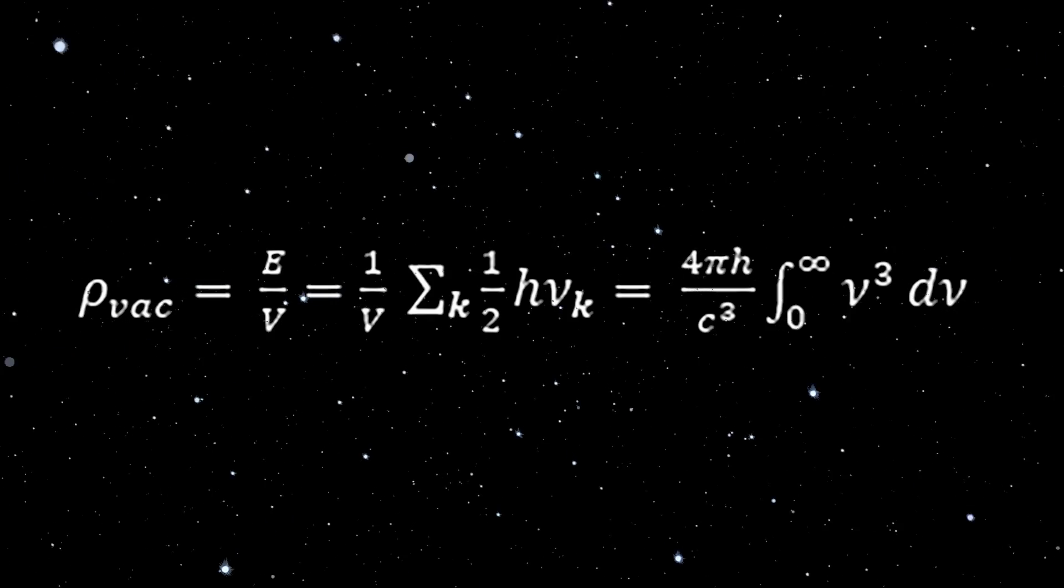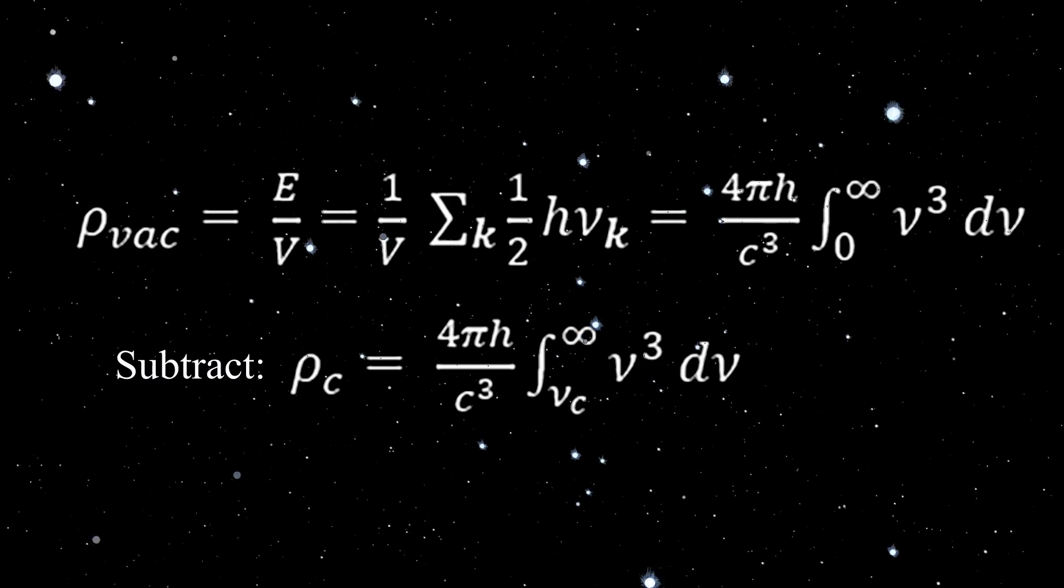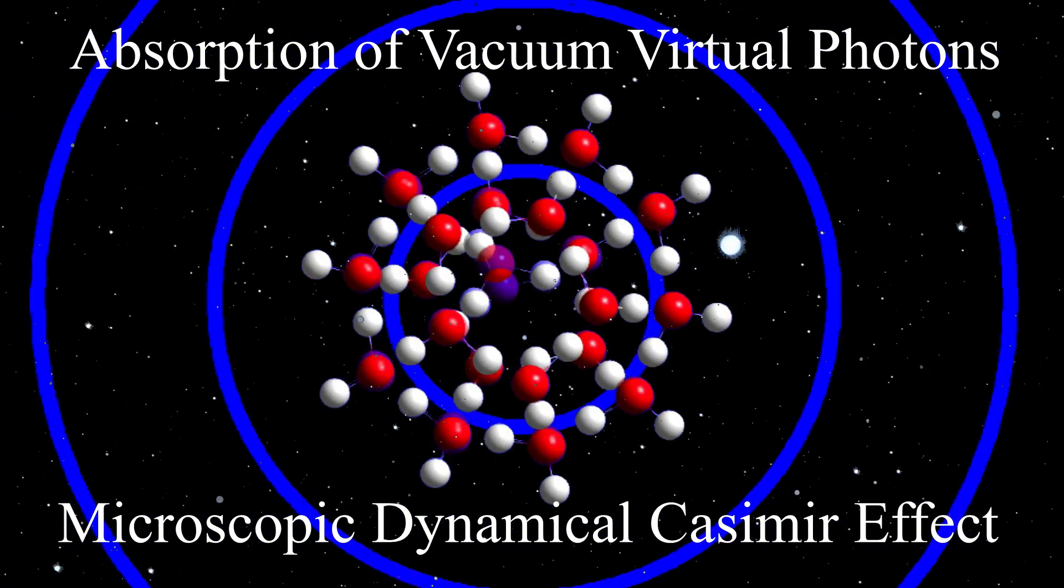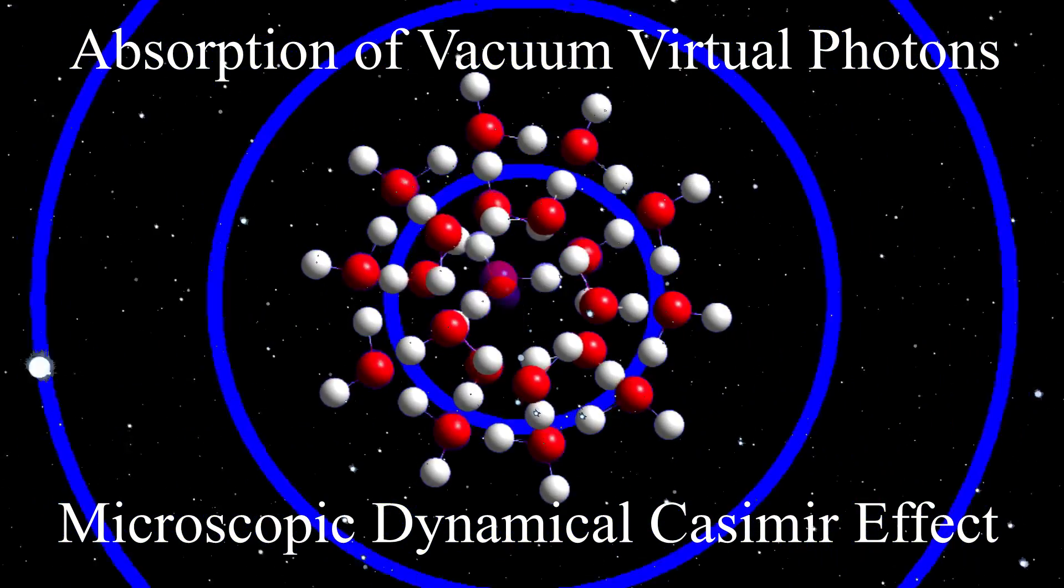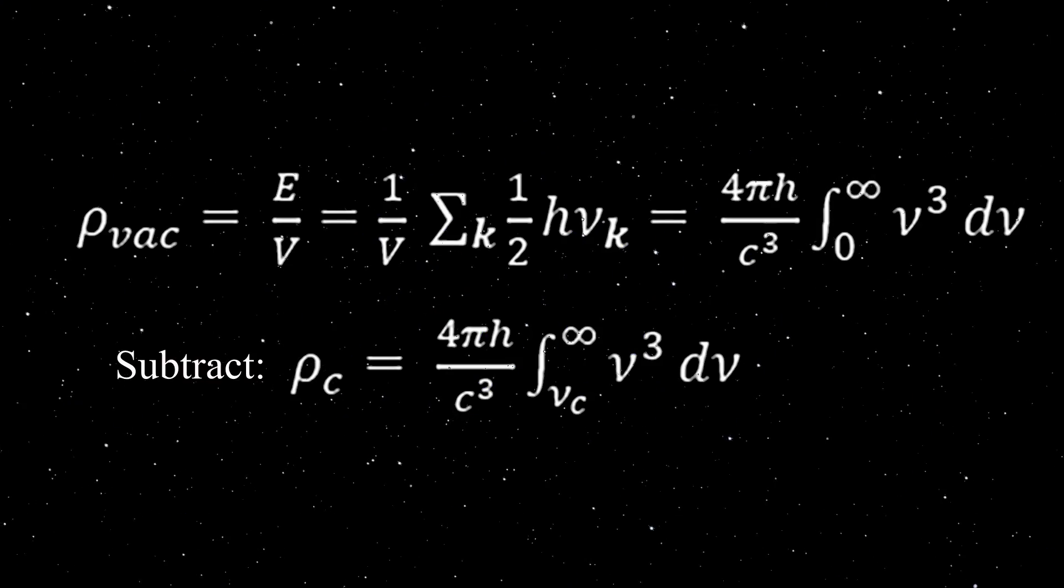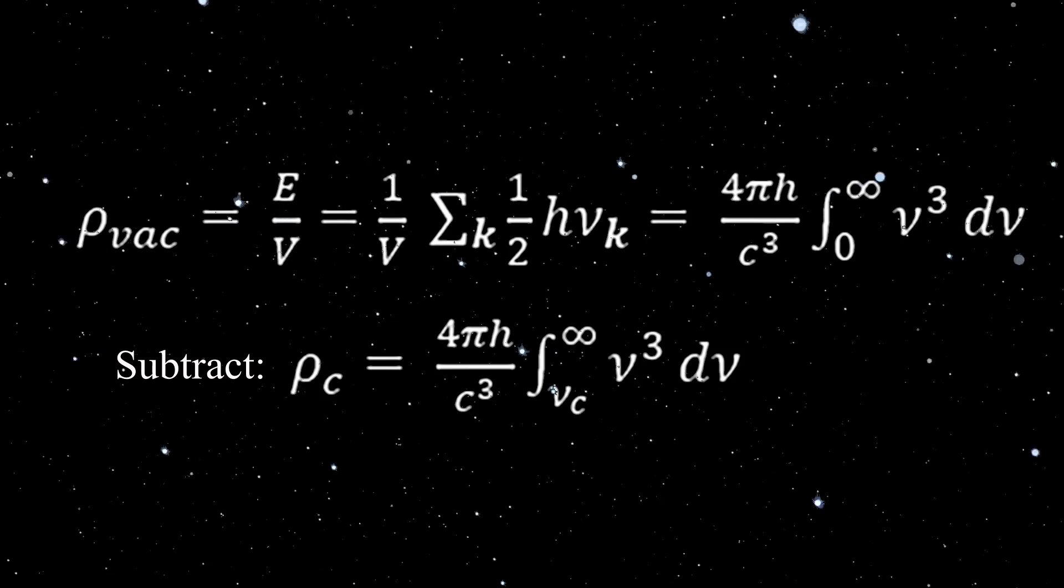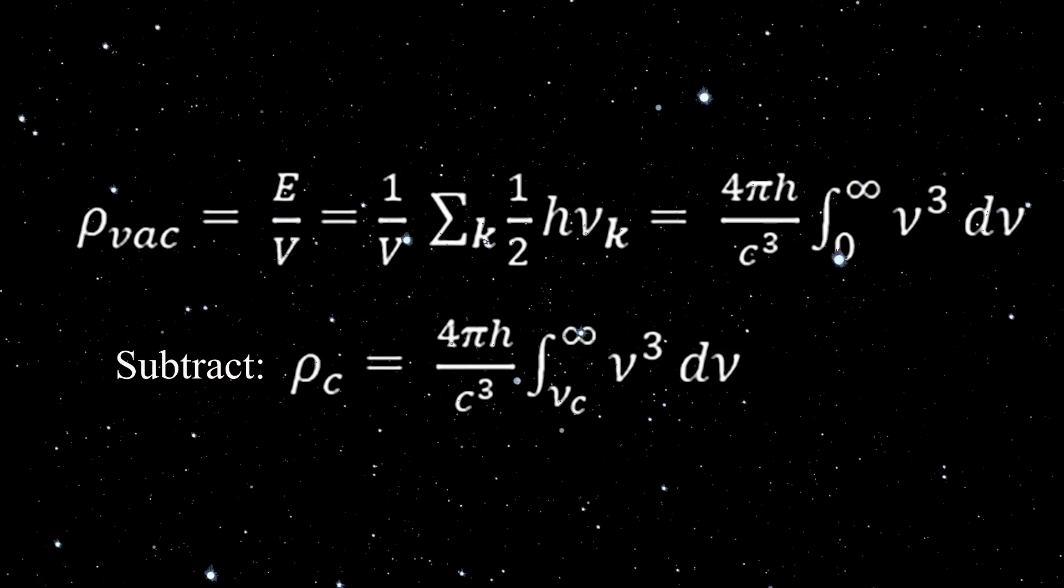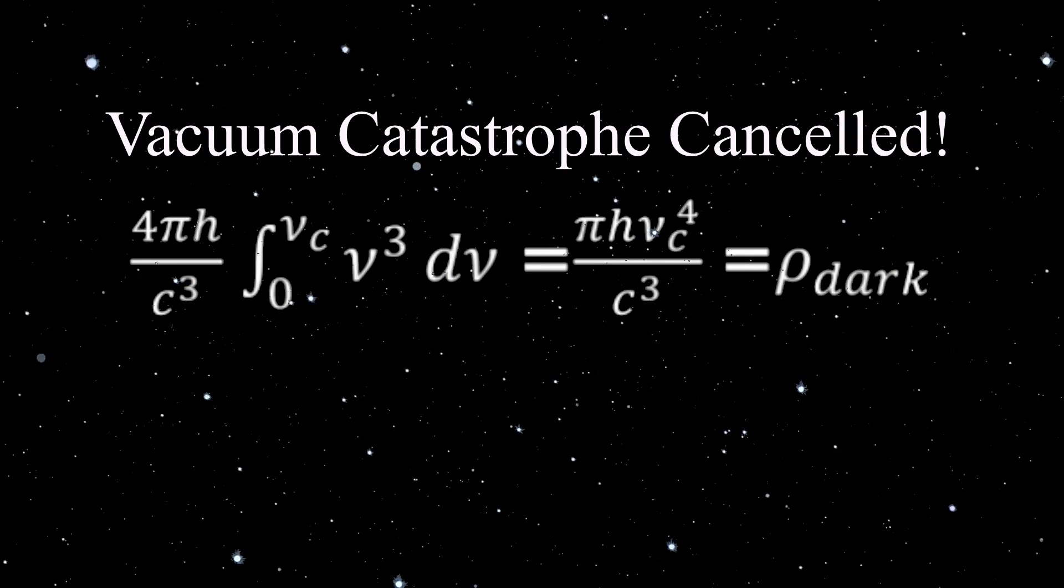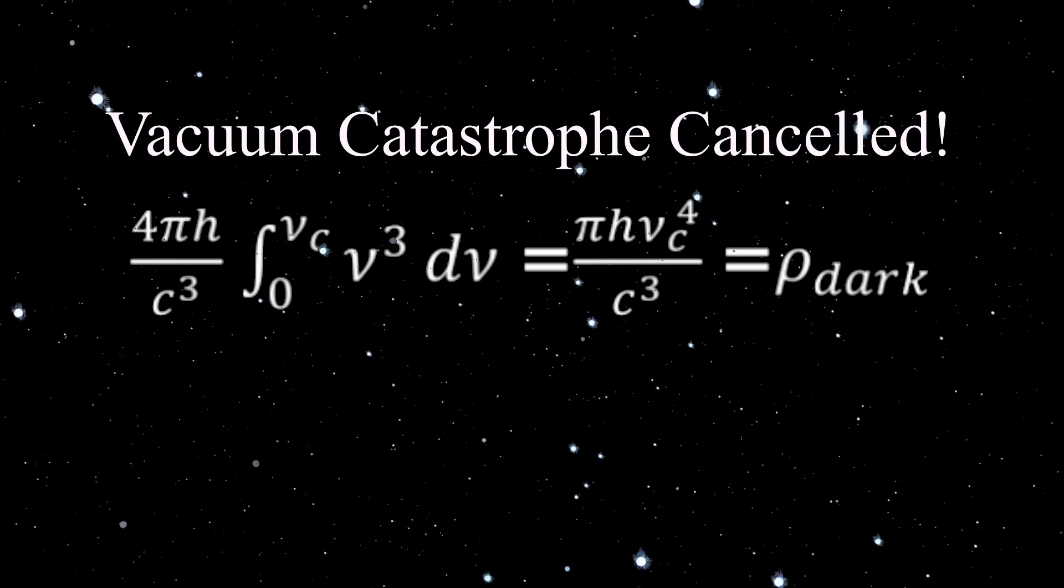If instead, we subtract the energy density rho sub c of virtual photons of zero-point vacuum fluctuations captured by ejected water nanoclusters through the microscopic dynamical Casimir effect, the divergent integral is largely cancelled. Nu sub c is the cutoff vibrational frequency of the ejected water nanoclusters. This leaves the finite quantity shown to be identified with the dark energy density.